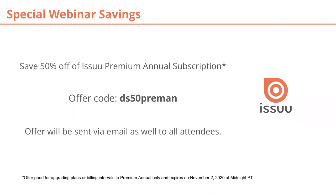I think that is all the time we have today. We'll be collecting all of the questions and following up with any questions that we may have missed. As a special thanks for everyone who has joined and stuck around today, we have 50% savings on our Issue Premium annual subscriptions — this is our most popular plan. The offer code is DS50PREMAN, and that will be good until November 2nd, 2020 at midnight Pacific time. If you are currently an Issue user, we will also be sending an email link — please wait for that email link for the offer codes.